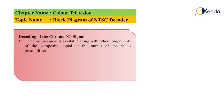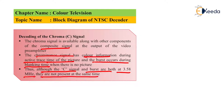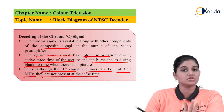Now the first circuit used in the NTSC decoder is the decoding of the chroma signal, or decoding of the C signal. The chroma signal is available along with other components of the composite signal at the output of the audio preamplifier. The chroma signal has color information during the active trace time of the picture, and the burst occurs during the blanking time when there is no picture. Therefore the chroma signal and the burst signal, both at 3.5 megahertz, are not present at the same time.